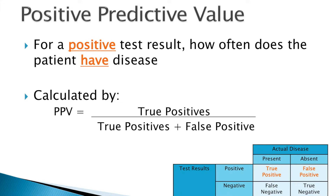Moving on to predictive values, a positive predictive value informs the reader that where a positive test result is found, how often does the patient actually have the disease? In other words, how often when a positive test is identified is that test actually correct? Positive predictive value is calculated by identifying the true positives and dividing them by the true positives plus the false positives.